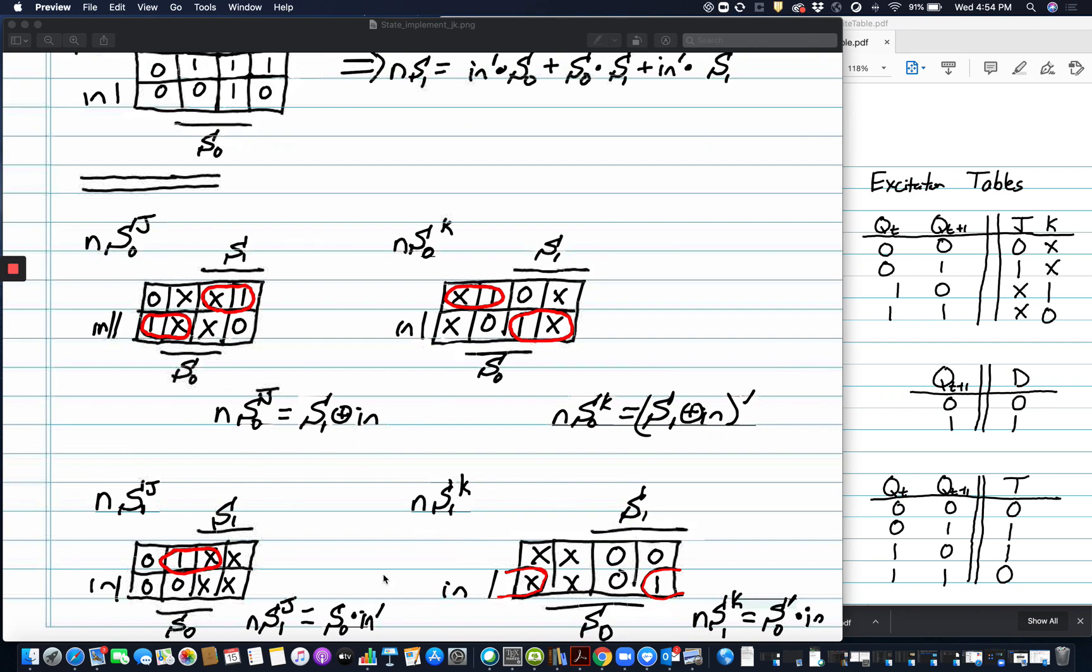So we didn't get any real improvement on the S0 next state, but we got a huge improvement on the S1 from this big ugly multi-layered complex statement to these two very clean, simple statements.